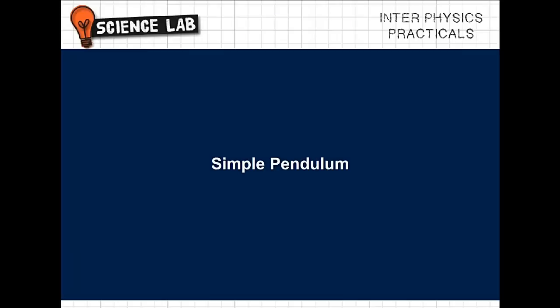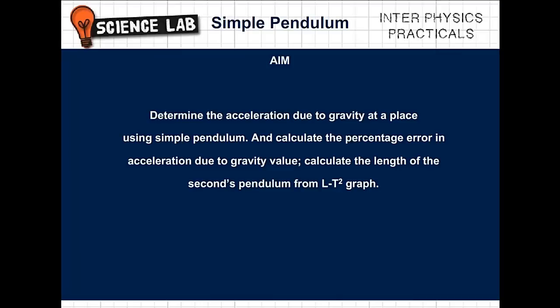Simple Pendulum. Aim: Determine the acceleration due to gravity at a place using simple pendulum and calculate the percentage error in acceleration due to gravity value. Calculate the length of the seconds pendulum from L-T² graph.